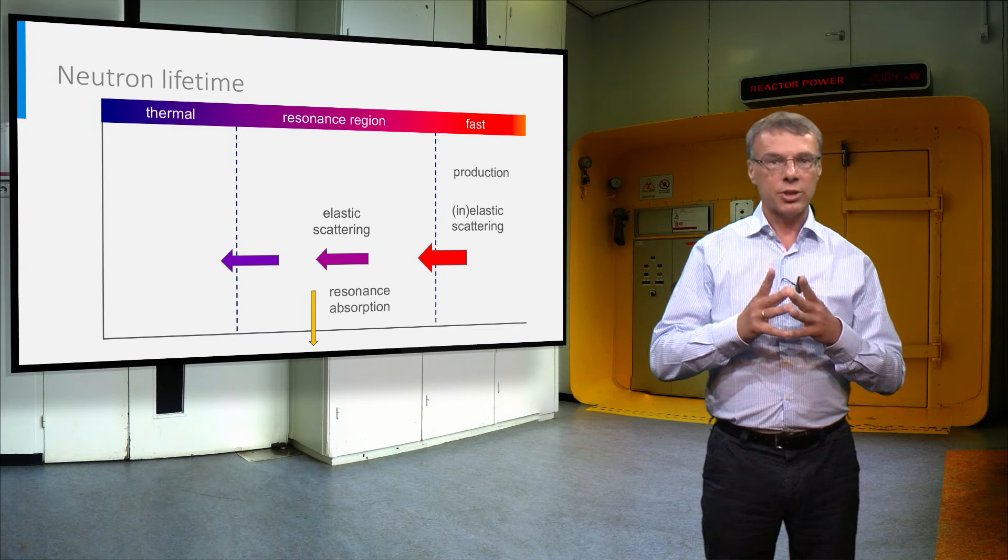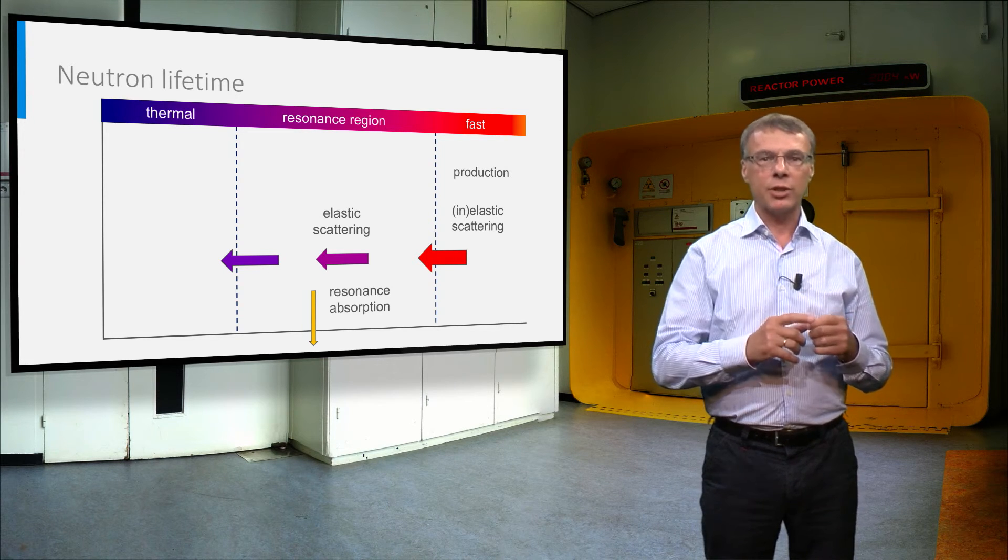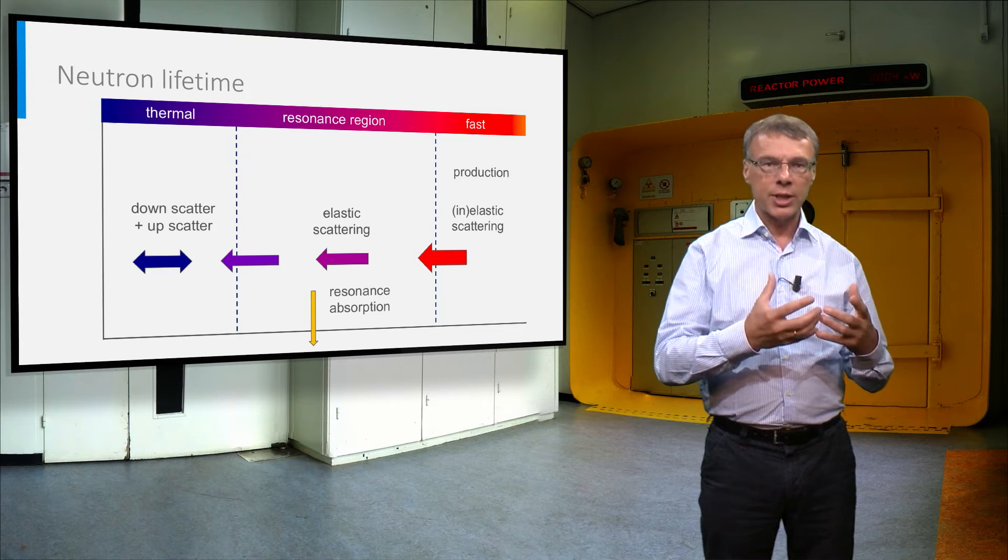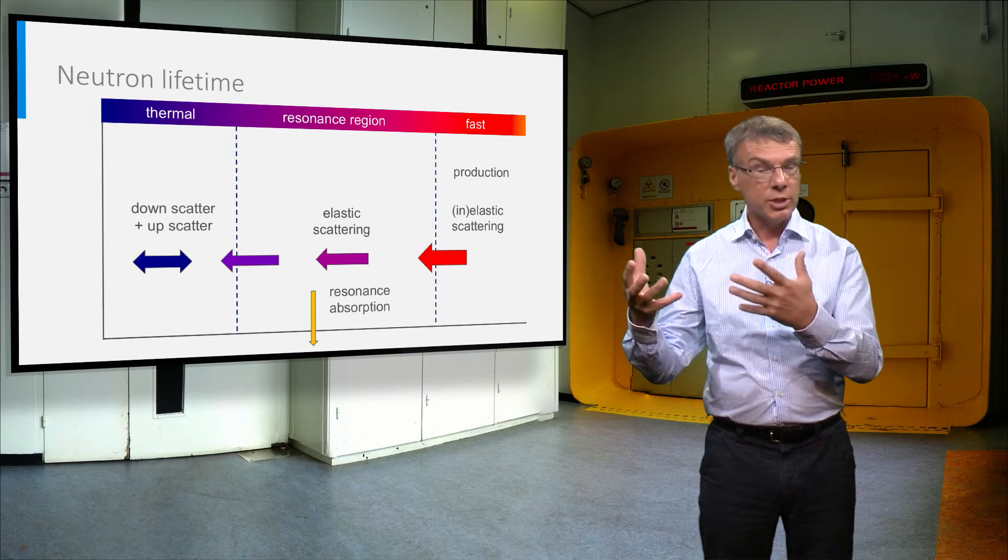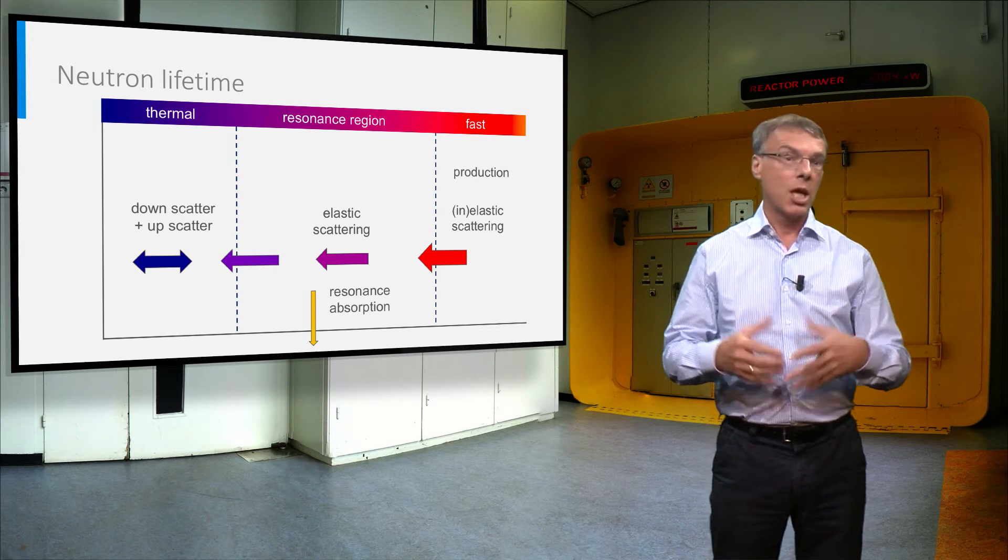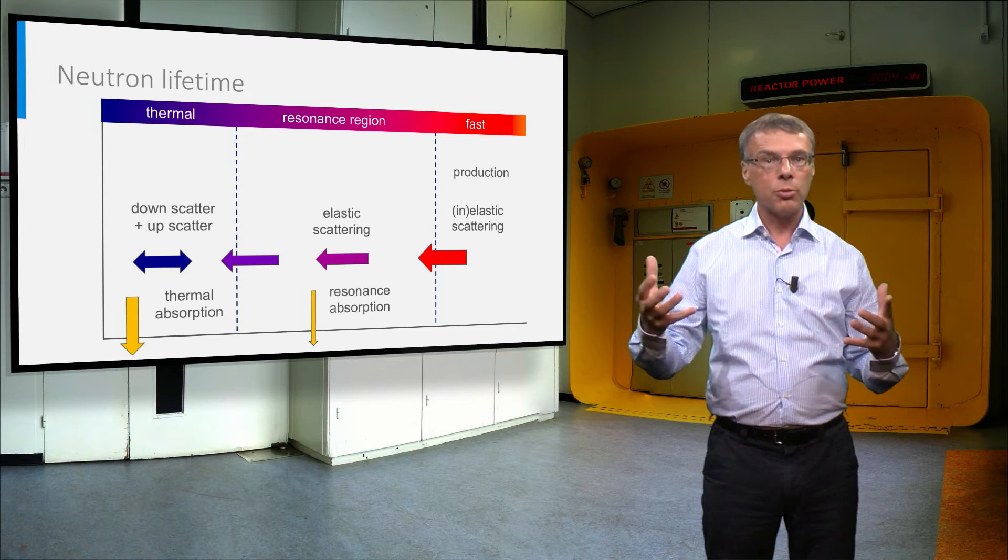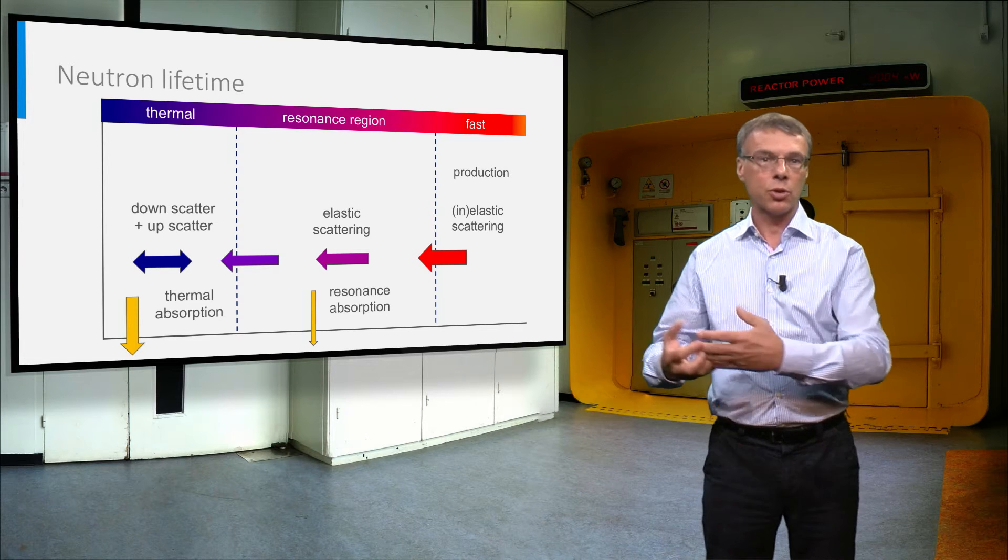When the neutron survives the resonance range, it will reach the thermal energy range and this range is very special, because the moderator atoms have an energy comparable to that of the neutrons, which means a neutron can also gain energy in a collision. But eventually, all thermal neutrons will be lost via absorption in the reactor core or via leakage out of the core.